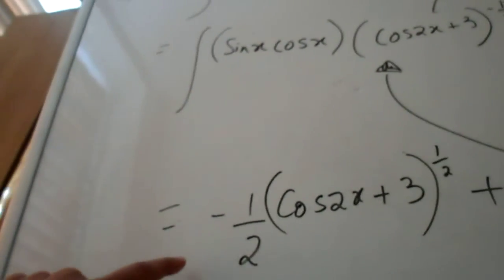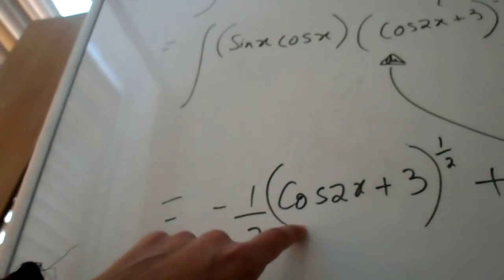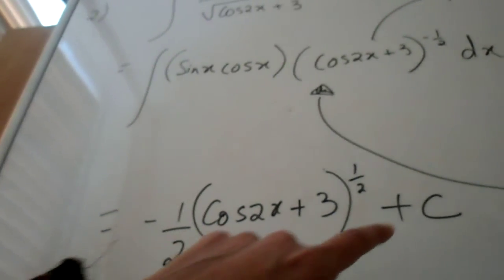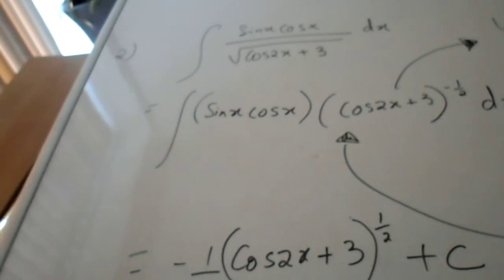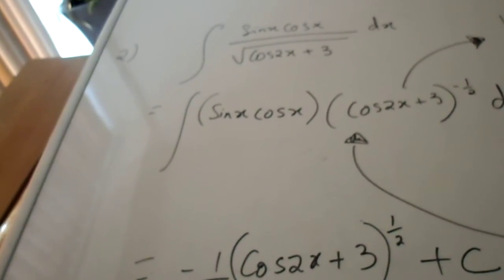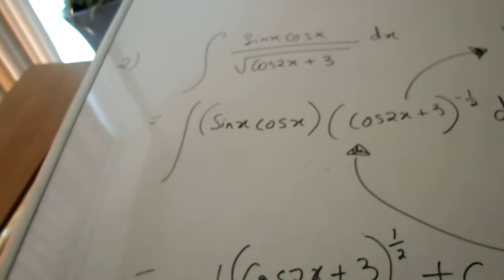So of course your final answer is equal to minus half cos 2x plus 3 to the power of half plus c. So they are the two types of recognition methods which you need to bear in mind. I hope that this was helpful.